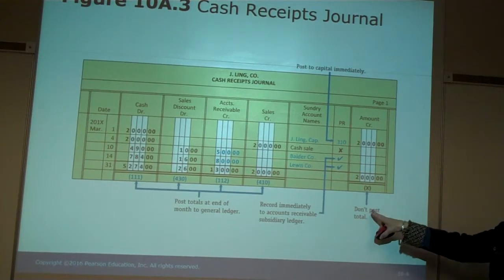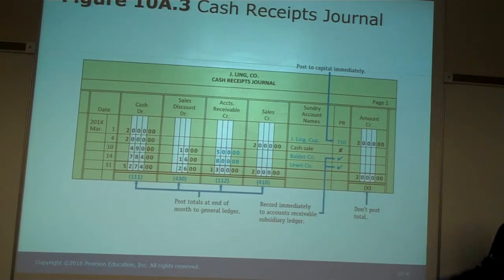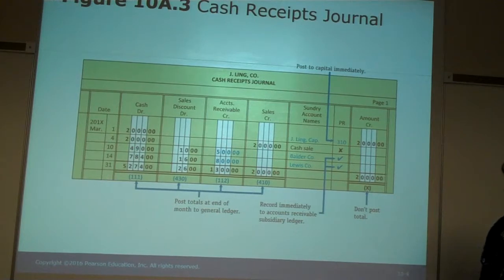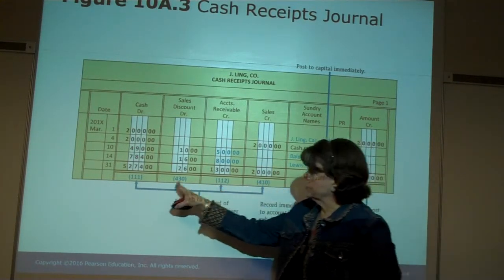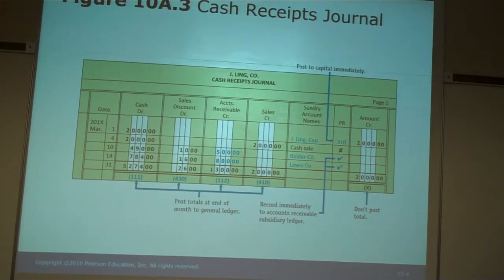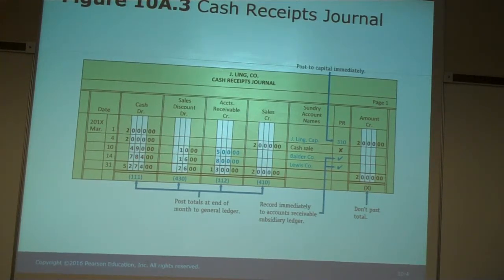We're not posting the total here, but we would post our numbers there — to our capital, and to our accounts receivable subsidiary ledgers. We put our account numbers down here when we posted, and you can see how much time that would have saved us. But for every problem, we would have had to have pages for the special journals. I'm not sure why we've gone back in this edition of the book to putting the special journals back in, because they haven't been in for probably six years. In each one of those new editions, we've just used the general journal, where everything is recorded in there.